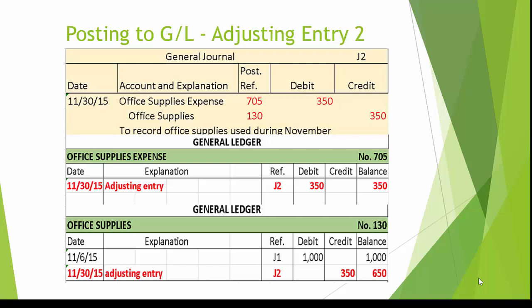At the same time, in the general ledger, in the reference column, there is a J2 reference pointing back to page 2 of the journal. Office supplies is credited for $350, so you can see the credit being posted into the general ledger account, and now the balance in office supplies drops to $650.